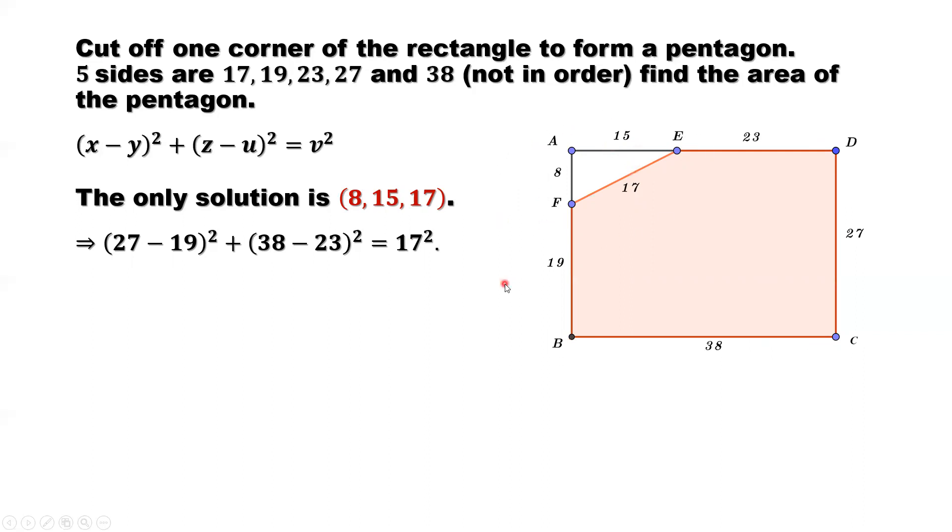Now we are ready to calculate the area of the pentagon. We know the total area of this rectangle, which is 38 times 27. But we cut off one corner, we need to remove this area out. The area formula for this little triangle is one half times 8 times 15.